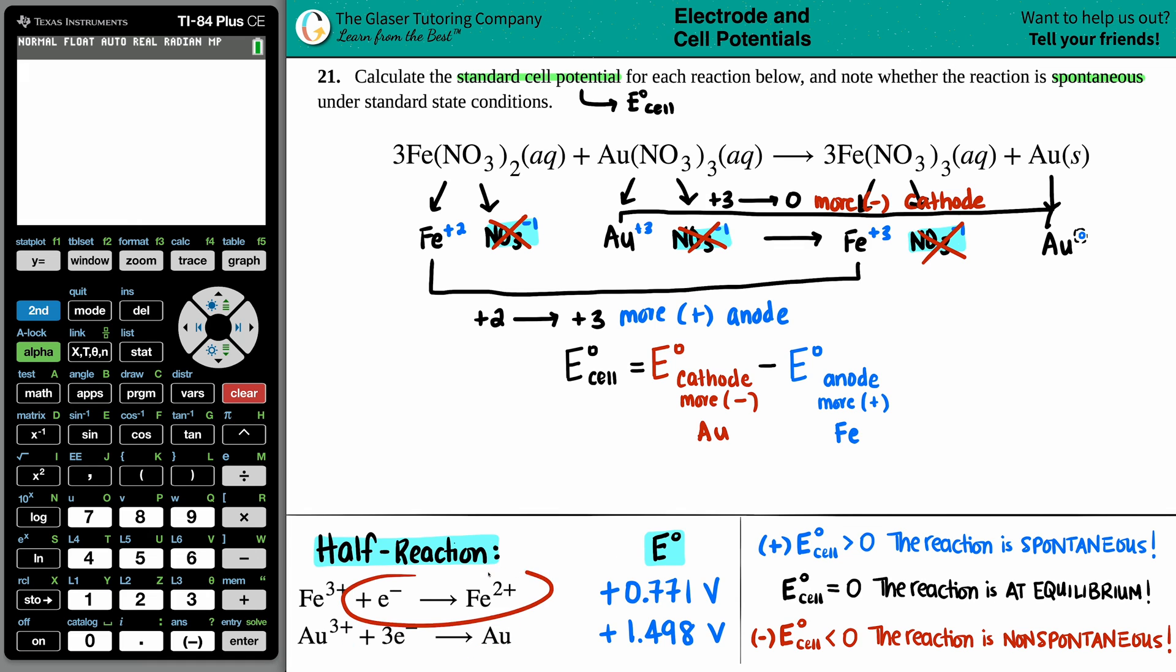Now I have my E values that I'm going to link up with Au and iron. If you're using cathode minus anode - not cathode plus anode - you never have to change these values in the back of the textbook. I like to use that because it's easier. So the Au number goes first: that's 1.498. I'm going to minus that with the iron one, which is 0.771. Let's plug it in: 1.498 minus 0.771 equals 0.727 volts. So there is that cell potential.